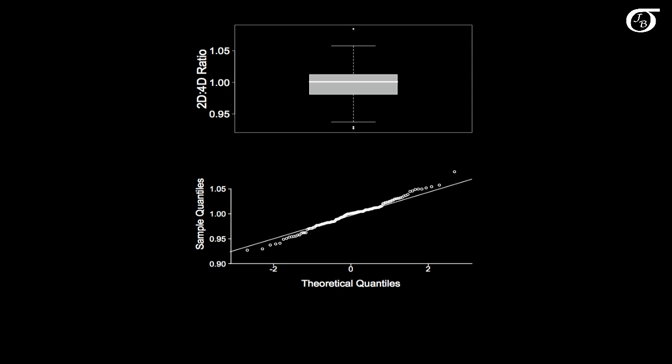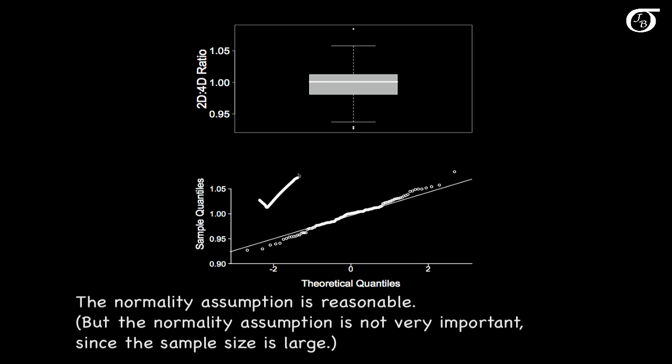We should always plot our data and have a look. Here I've plotted out a box plot and a normal quantile quantile plot. The normal quantile quantile plot results in an approximately straight line, which indicates that our data is approximately normally distributed. So the normality assumption is reasonable here. But since our sample size was fairly large, 135, the normality assumption was not all that important, and even if this showed some deviations from normality, the methods would still be reasonable.